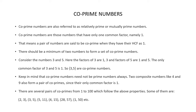Consider the numbers 3 and 5. Both these are prime numbers. The factors of 3 are 1 and 3. Factors of 5 are 1 and 5. The only common factor of 3 and 5 is 1. So 3 and 5 are co-prime numbers.